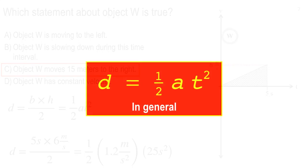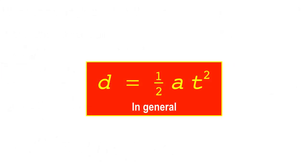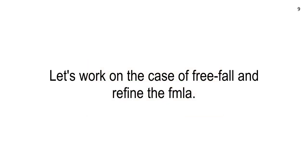The general formula used is d equals one half at squared. Remember, this is a simple distance calculation good for starting from rest or coming to a stop. If you're trying to figure out a position, you also need to know the initial x coordinate and any initial velocity. Now I want to work on the case of free fall. We'll come back to clicking in just a few minutes and refine the formula a tiny bit.